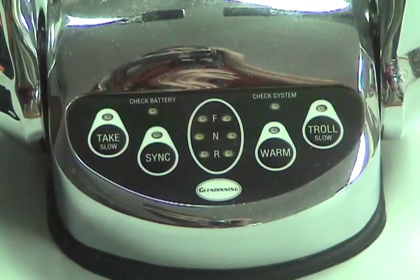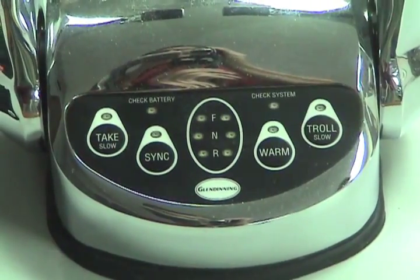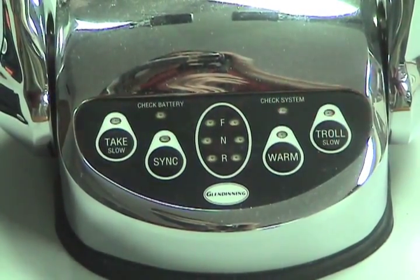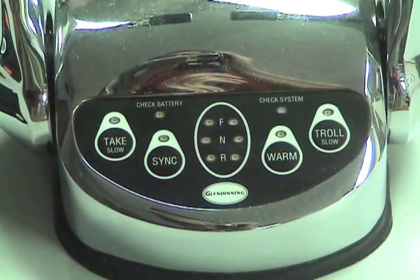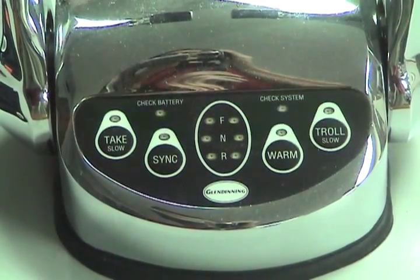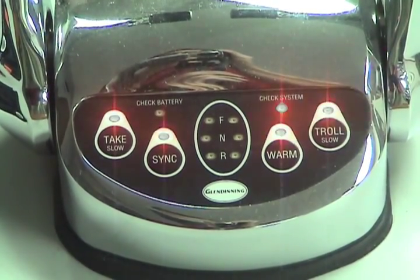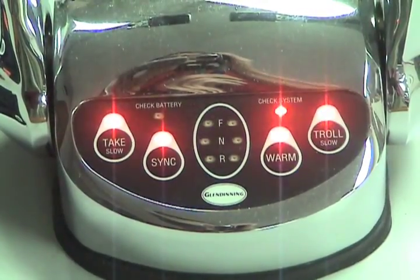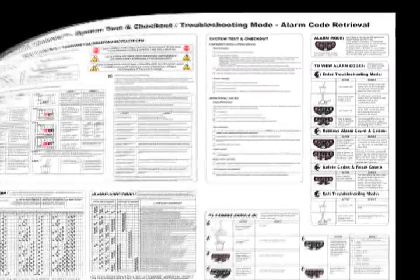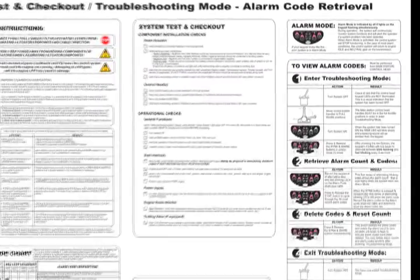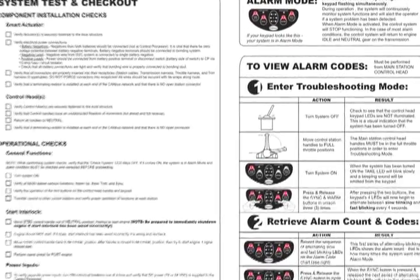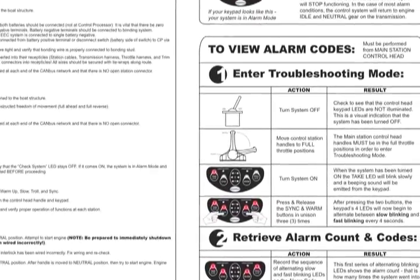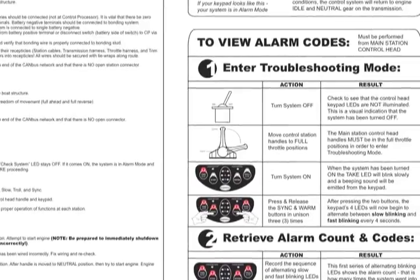The purpose of this video is to demonstrate the procedure for recalling these alarm codes from the system memory. Knowing which alarm codes are in the system memory will help to determine the cause of the alarm condition. This procedure is also explained in various technical documents and the installation manual, and is also called the troubleshooting procedure.